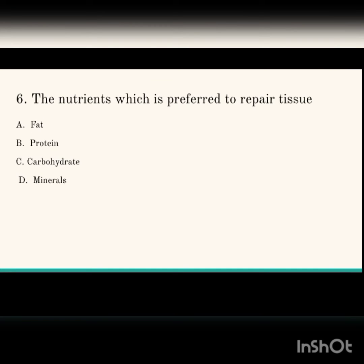Next question: the nutrient preferred to repair tissue. The options are fat, protein, carbohydrate, and minerals. The answer is protein.